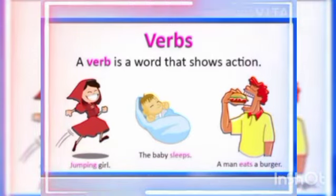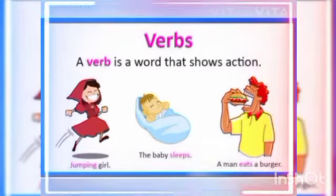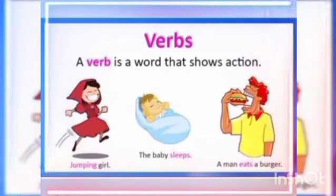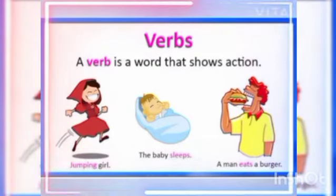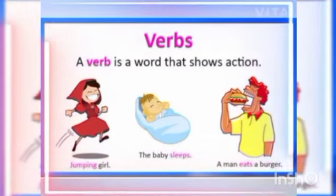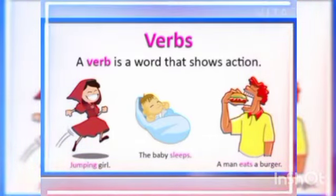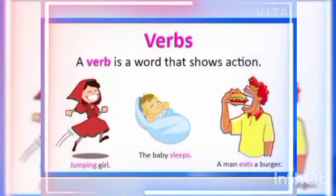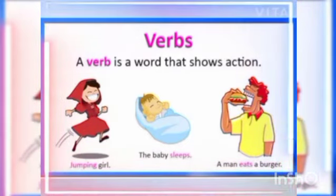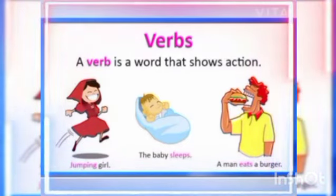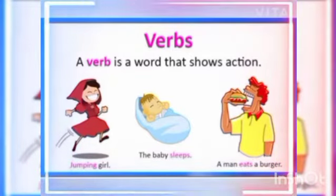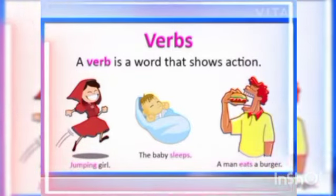Like, few examples are given here. Jumping girl — the action done by this girl is jumping, so jumping is a verb. The baby sleeps. What is the baby doing? The baby sleeps, so sleeps is an action word. It's a verb.